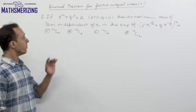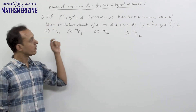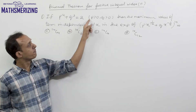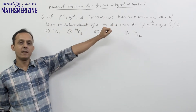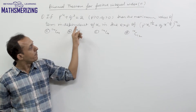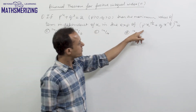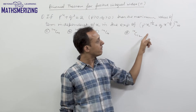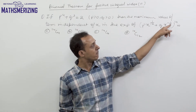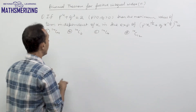Let us take another problem. The problem is: if p to the power 4 plus q cubed equals 2, where p and q are both positive, then find the maximum value of the term independent of x in the expansion of (p·x^(1/12) + q·x^(-1/9))^14.